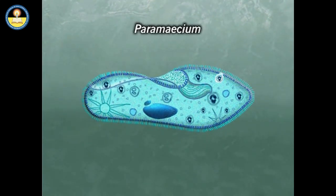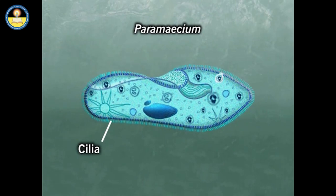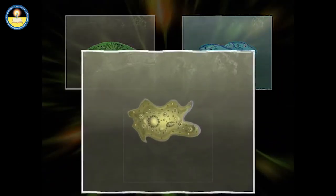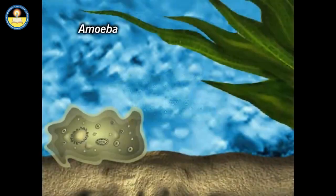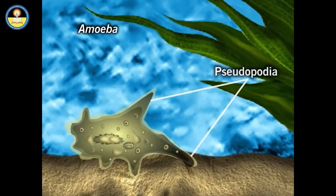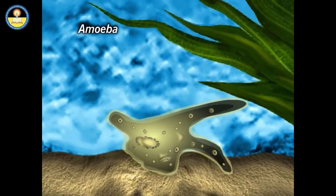Paramecium is a single-celled freshwater animal. It has tiny hair-like structures called cilia all around its body. Paramecium moves by beating the cilia back and forth, often changing its direction. Amoeba also has only one cell for its entire body. It moves by changing the shape of its body and forming pseudopodia, and also engulfs food with the help of pseudopodia.